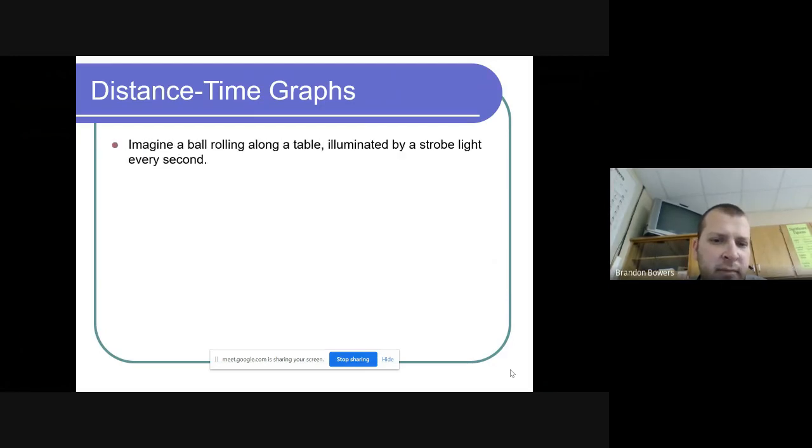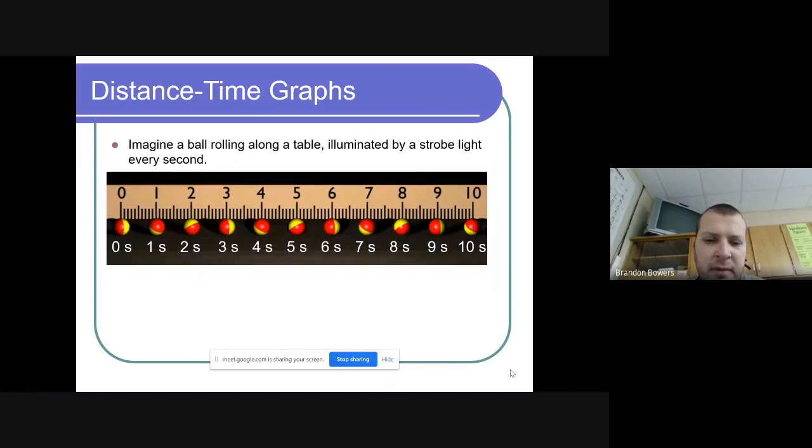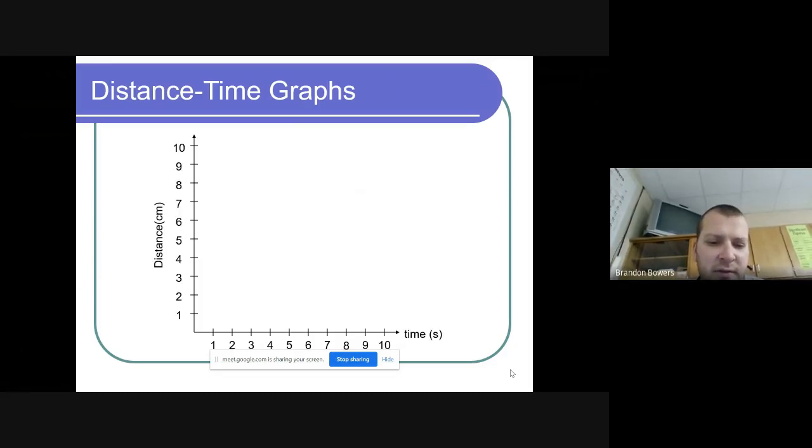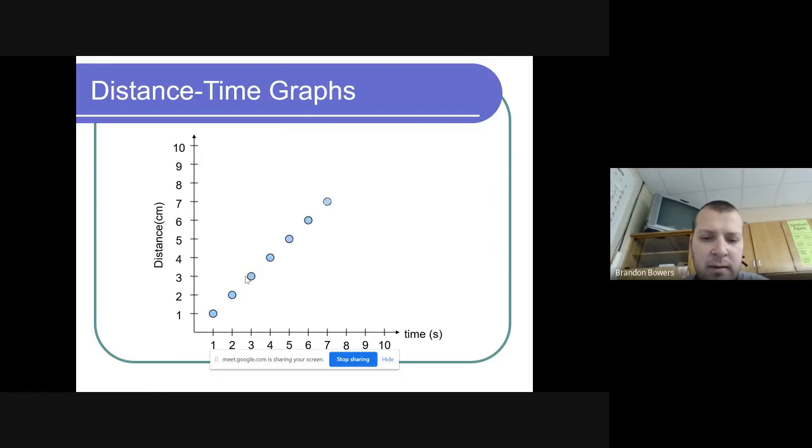Imagine a ball rolling on a table illustrated by a strobe light every second. One second it traveled one inch, two seconds two inches, etc. So in one second one centimeter, at two seconds two centimeters, three and three. It seems to be going upwards at an angle. After ten seconds occurred, ten centimeters was traveled.